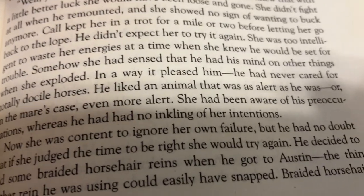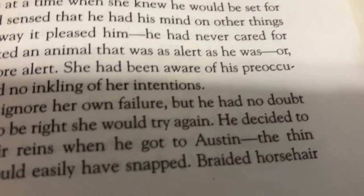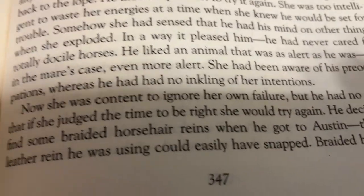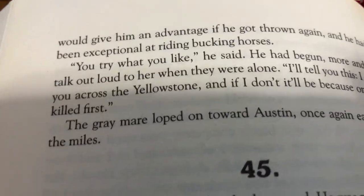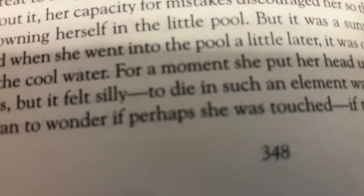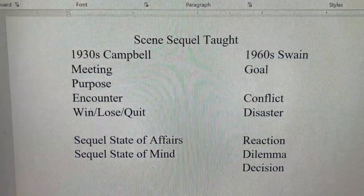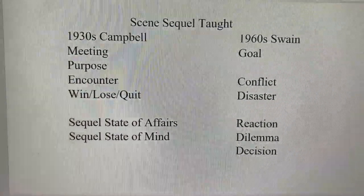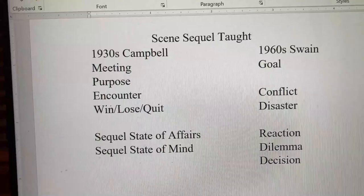He makes a decision: he decided to get some braided horsehair reins when he got to Austin. The thin leather rein he was using could easily have snapped; horsehair would give him an advantage if he got thrown again. That is the end of chapter 44, page 348 in this volume. He had a reaction, he thought about it, he made a decision. He knew the state of affairs and the state of his mind — and the horse's mind. She might try again.